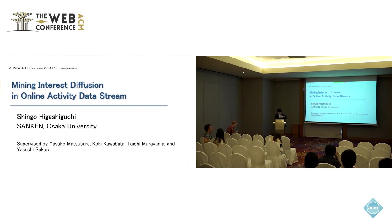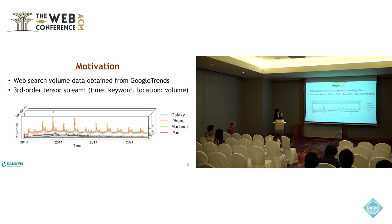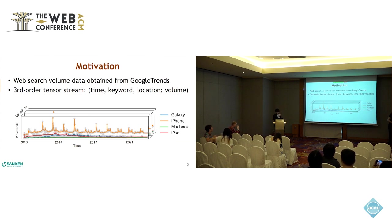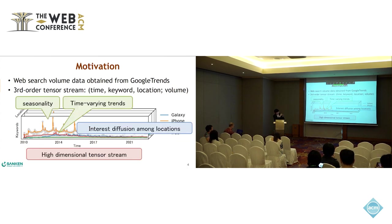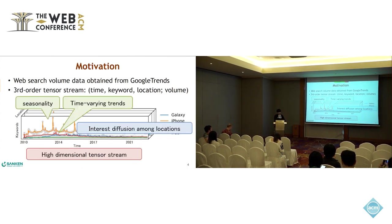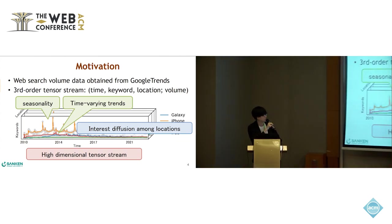My name is Shingo from San Ken Osuk University. Let me start with motivation. We consider modeling web search volume data obtained from Google Trends. It is a third-order tensor stream consisting of three attributes: time, keyword, and location. However, modeling this data is a challenging task for the following reasons.